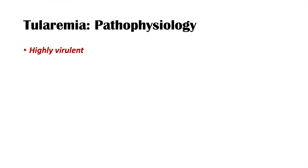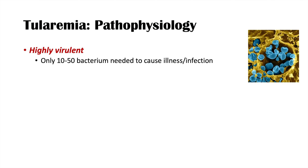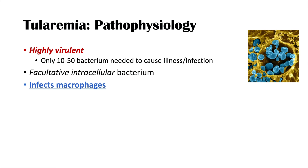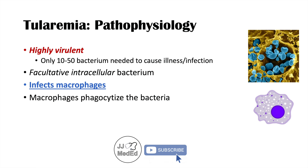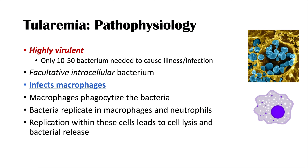Francisella tularensis is a highly virulent bacteria — it only takes about 10 to 50 bacterium to cause an illness or infection. It is a facultative intracellular bacterium, meaning it can live within particular cell types. It actually infects macrophages in a host. Macrophages phagocytize the bacteria as they're supposed to, but the bacteria can survive and replicate inside those cells, and also inside neutrophils.